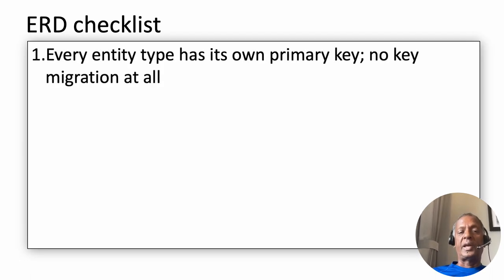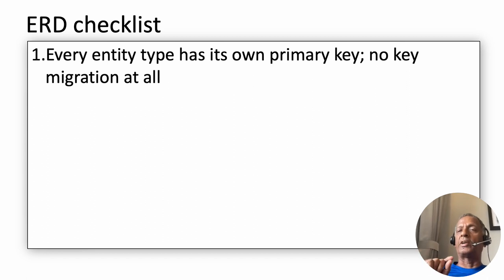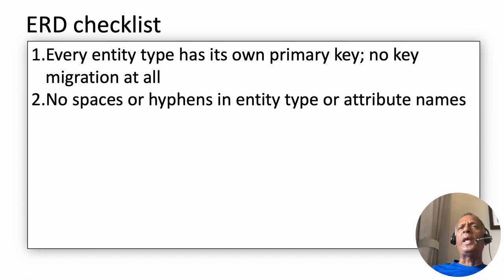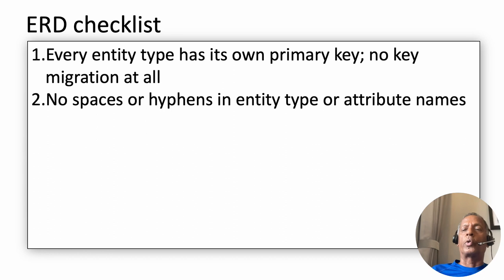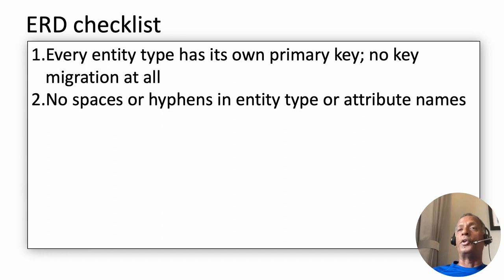First requirement: every entity type must have its own primary key — there is no key migration at all. After you build the logical model, go check for this, and if there's a problem, fix it right now. When you name your entity types, make sure the names don't have any spaces or hyphens in them. Oracle Data Modeler won't object within the logical model, but later when you try to create the database you'll run into difficulty. So don't have any spaces or hyphens in any entity type names or attribute names — check for this very carefully.